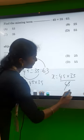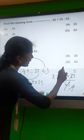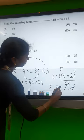If you cancel it, 63 becomes 9 and 45 becomes 5. So x equals 25.